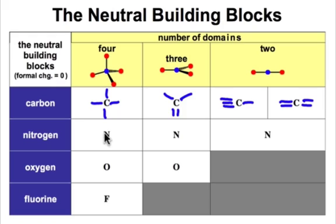What about nitrogen? Moving on down, nitrogen with 4 electron pair domains is going to be neutral if it has 3 single bond domains and 1 lone pair domain. It's going to be neutral with 3 electron pair domains if it has a double bond domain, a lone pair domain, and a single bond domain. And it's going to be neutral with 2 electron pair domains if it has a triple bond domain and a lone pair domain.